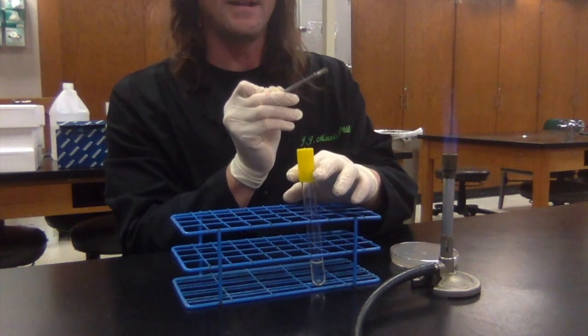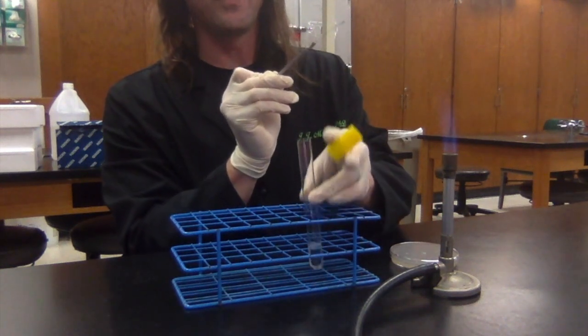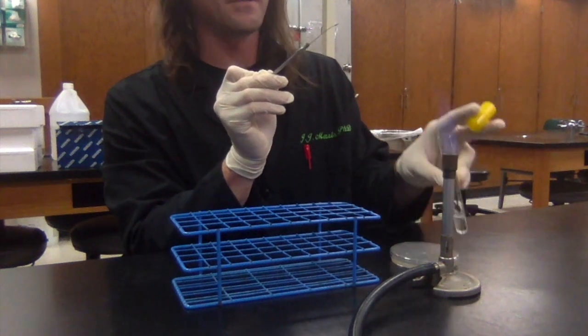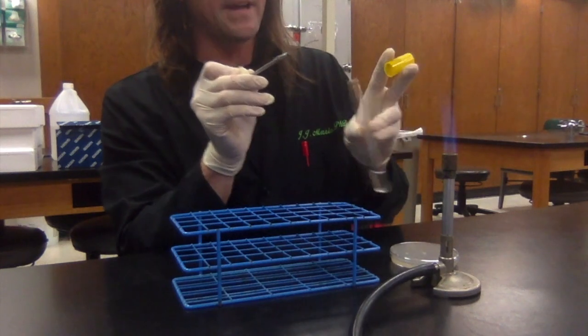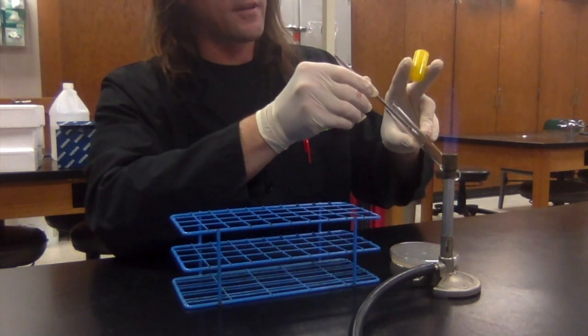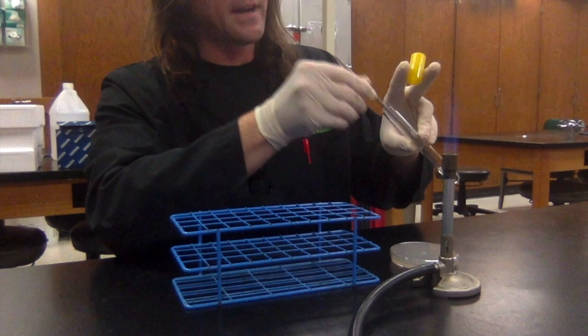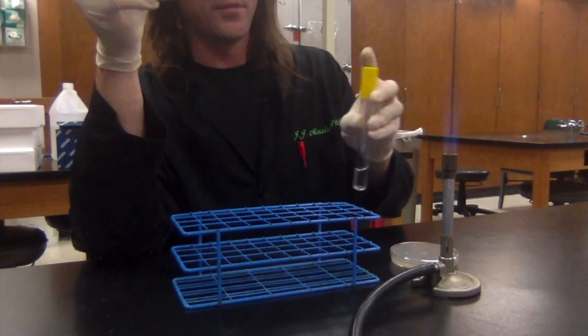Now I'm going to take off the cap of the tube and hold it between two of my fingers. With my thumb and my other fingers, I'm going to hold it and pass it through the flame. Then at a 45-degree angle, I'm just going to stick my loop in there and jiggle it around a bit. Flame the tube again, put the cap back.